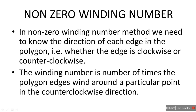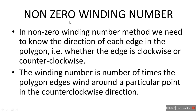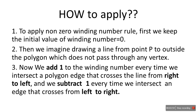Now the next method is non-zero winding number. In this method, we need to know the direction of each edge in the polygon — whether the edge is clockwise or counter-clockwise. The winding number is the number of times the polygon edges wind around a particular point in the counter-clockwise direction. Many people get confused with what is right to left and left to right — many online tutorials do not make it clear, so that is the reason I am making this video for you guys.